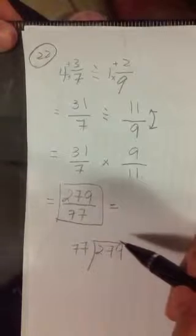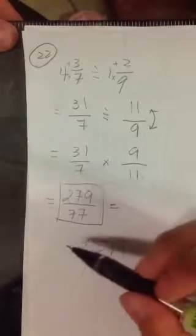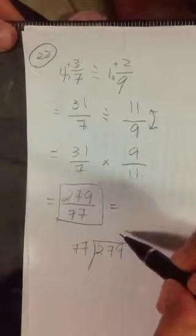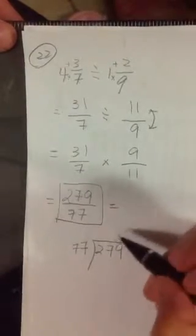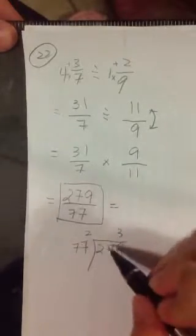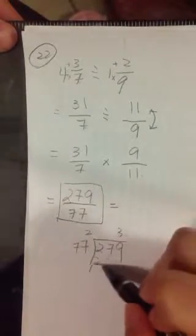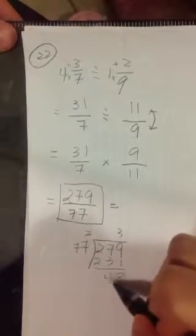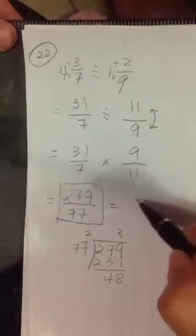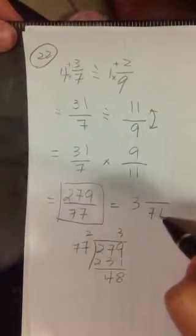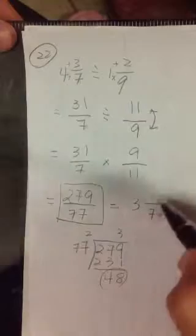So now we will see how many times 77 goes into 279, the closest one and not over it. I was thinking 3. So 7 times 3 is 21, 7 times 3 is 21 plus 2. So our answer will be 3, denominator stays the same, with a remainder of 48.